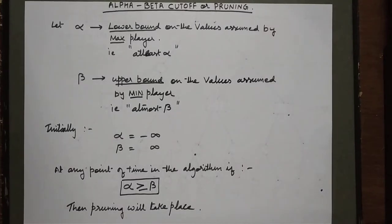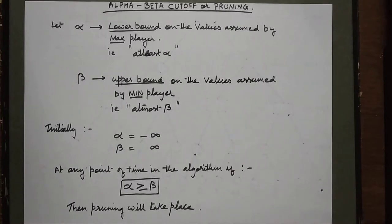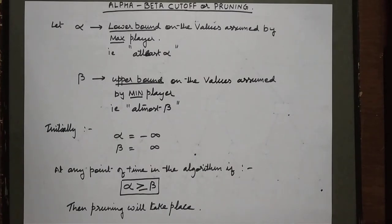Welcome back friends. In this video we are going to see a new technique — a modification to the minimax algorithm which is called alpha-beta cutoff or alpha-beta pruning. In the last video we had seen what the minimax algorithm is and we had also seen an example of how the minimax algorithm solves a problem.